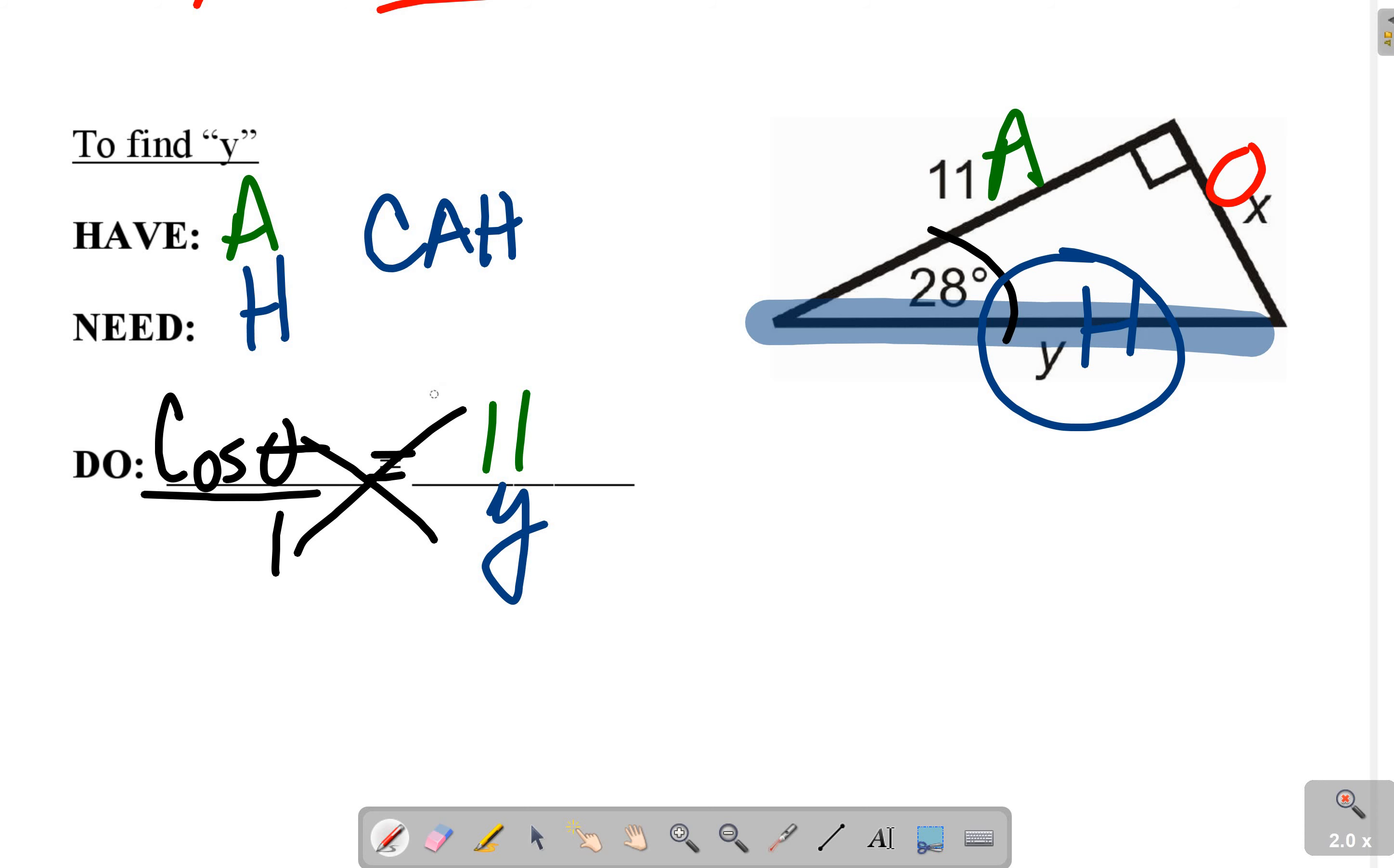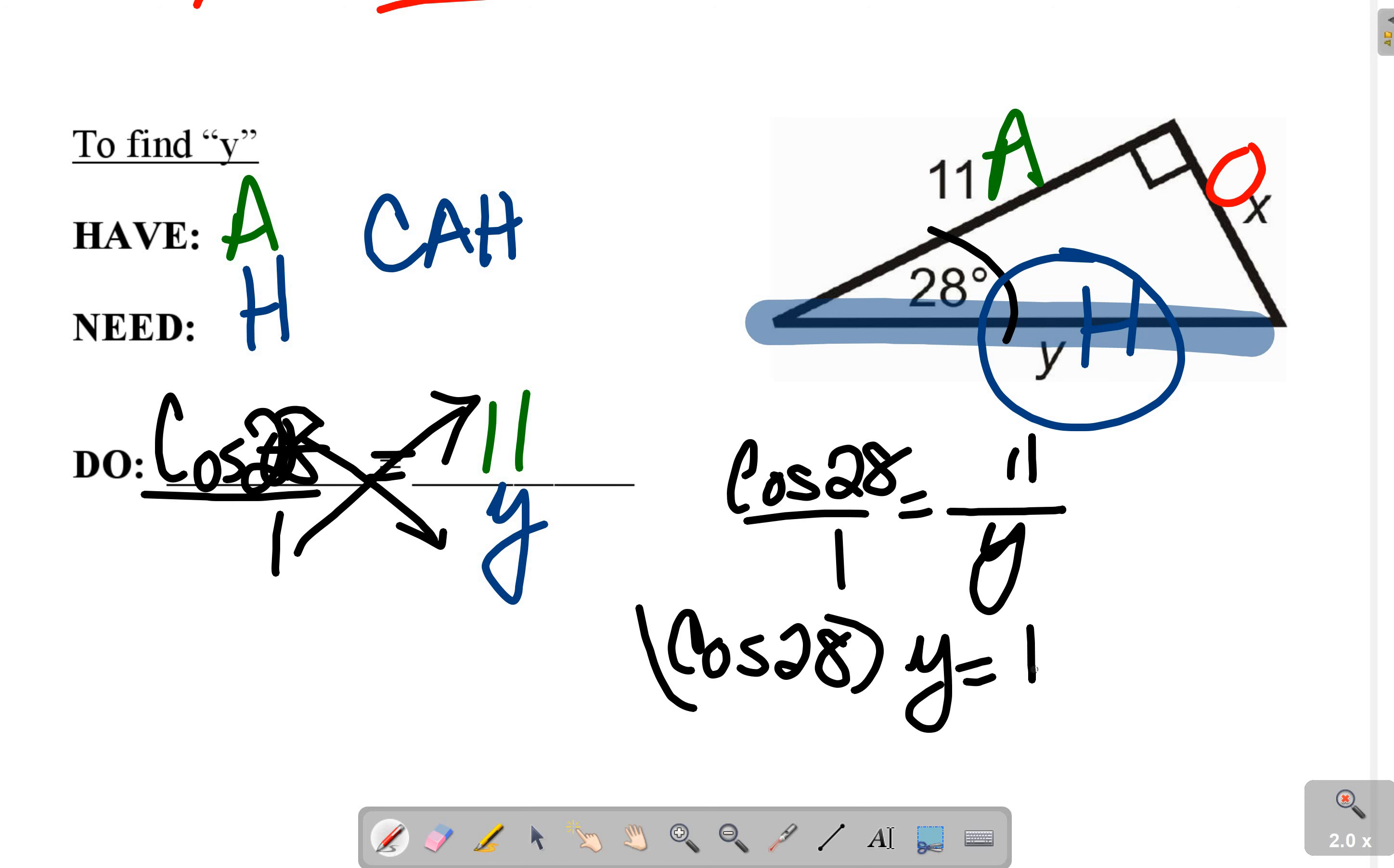Do not touch a calculator until x is by itself. So it's going to be cosine 28 over 1 equals 11 over y. Cosine 28 times y equals 11. So we divide by cosine 28. And we get our y equals 11 divided by cosine 28.